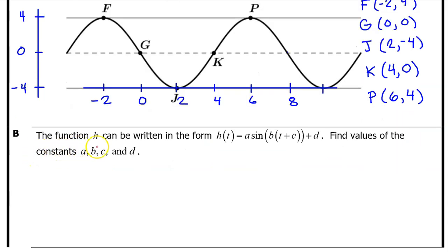Part B, the function H can be written in the form H of T equals A times the sine of B times T plus C plus D. Find the values of the constants A, B, C, and D.